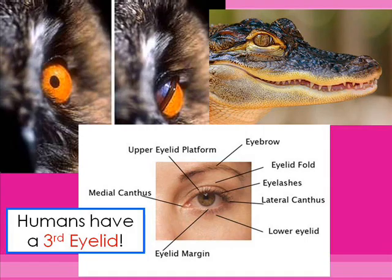Lastly, a lot of animals have a third eyelid — you can see these especially on crocodiles and alligators. It goes from the inner corner of the eye sideways and is often used by marine and lake animals when they go underwater but still need to see. Humans actually have a third eyelid too — the medial canthus. It's that tiny pink corner of your eye, which is tissue that used to be a third eyelid. Cadavers show that it can be pulled with tweezers and fits perfectly across the eye.